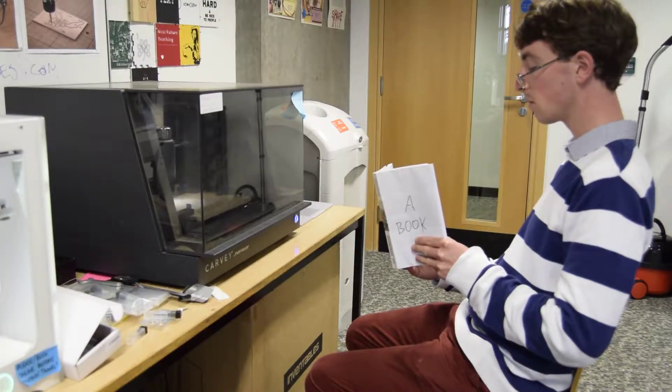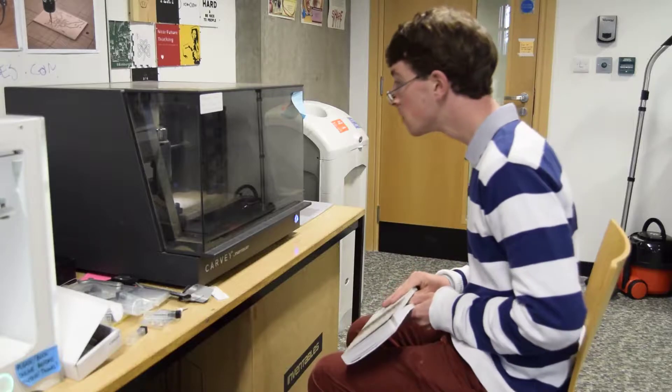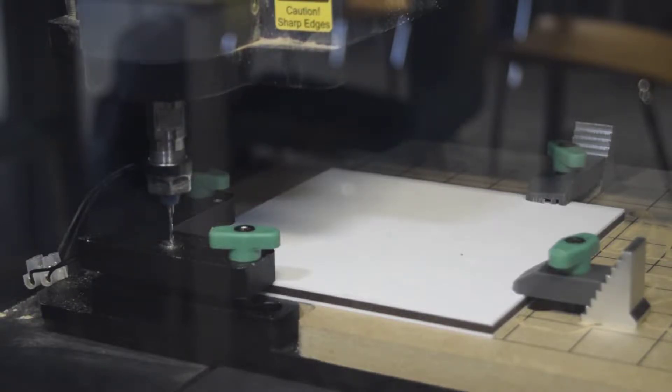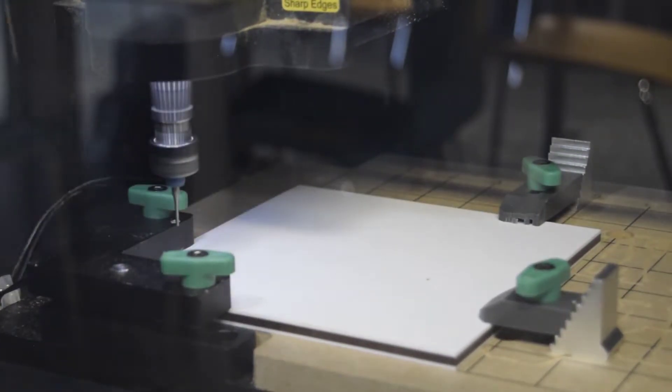While the machine is active, be sure to stay in the studio to keep an eye out for potential problems. At the beginning of every carve, the machine will calibrate by moving to the silver button on the smart clamp.